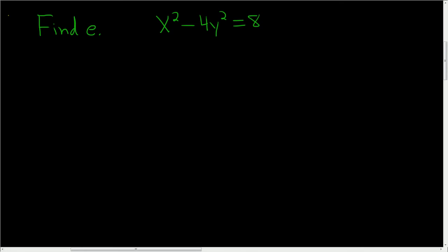We're asked to find the eccentricity of the following conic. This looks like a hyperbola. So to start, what we want to do is make the right-hand side 1. So we'll divide everything by 8.